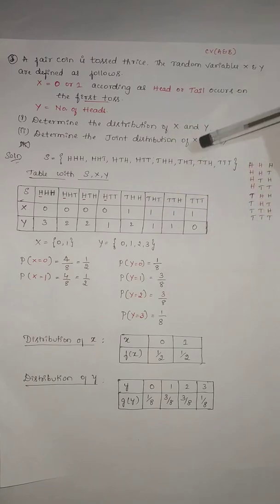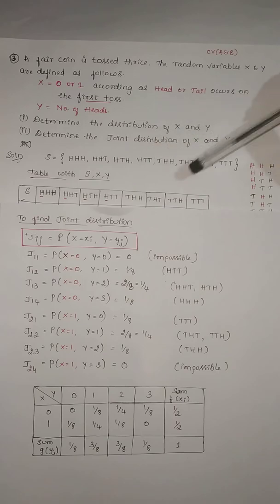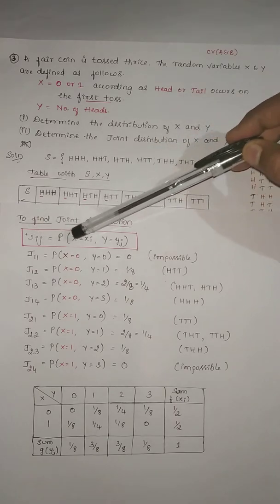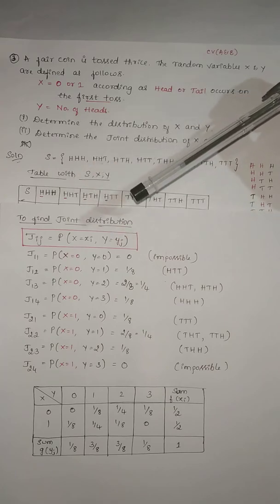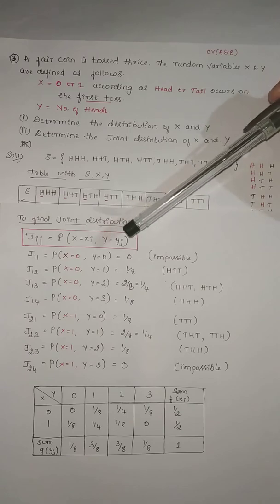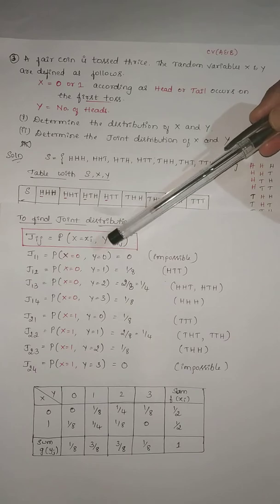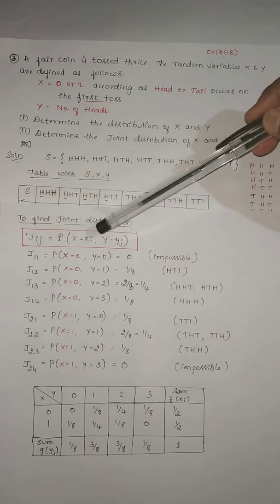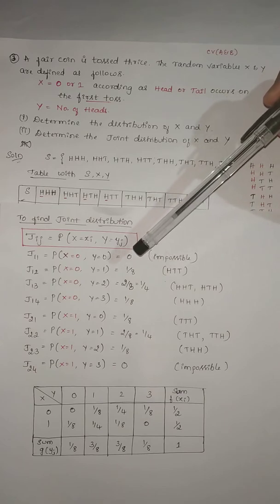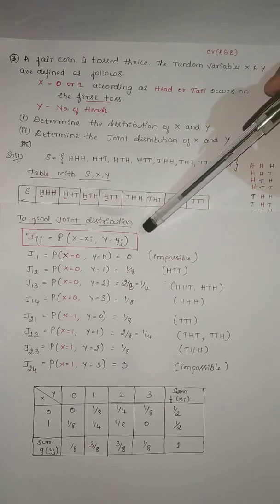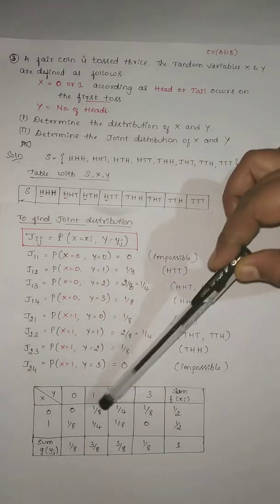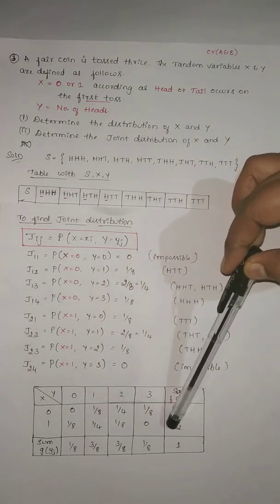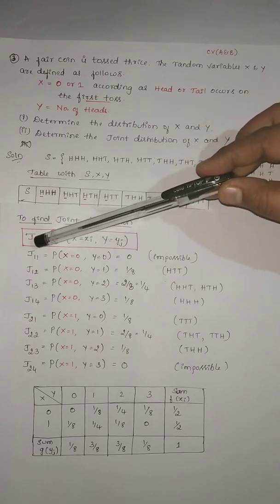Moving to the second question: finding the joint distribution of X and Y. The formula is j_ij = P(X = x_i, Y = y_j). Since no information is given about whether X and Y are independent, we cannot use j_ij = f(x_i) × g(y_j). We must use the basic definition of joint distribution to calculate all elements j_11, j_12, j_13, and so on.